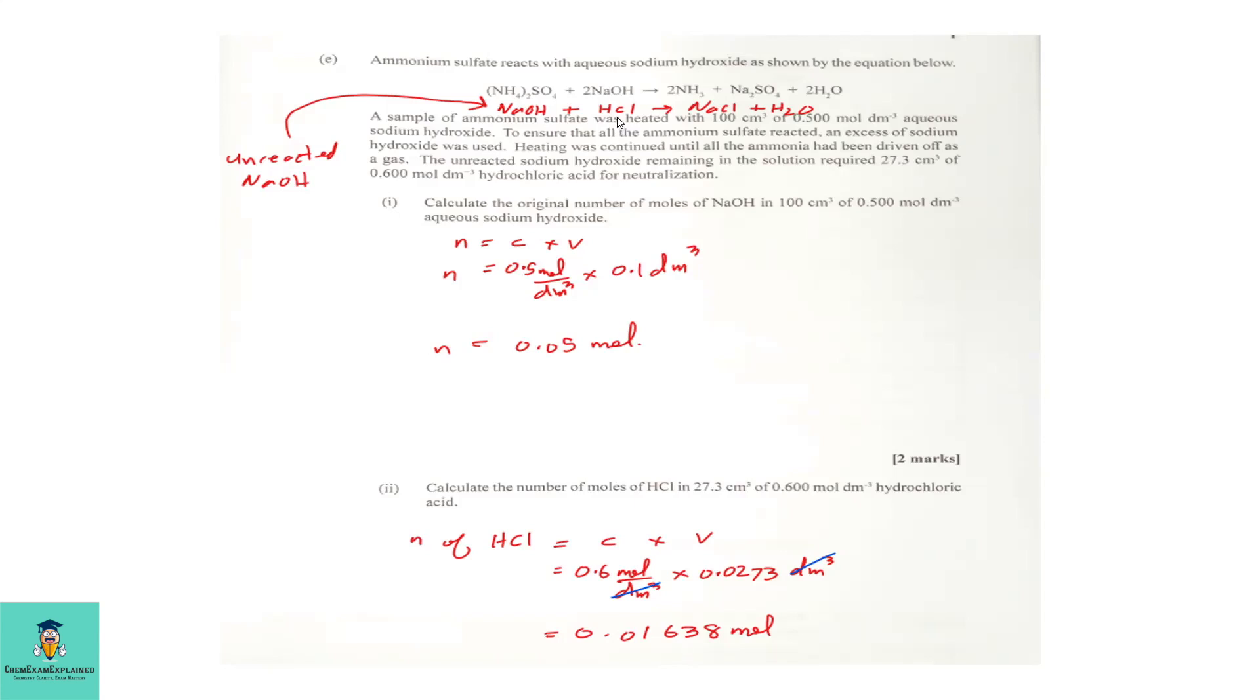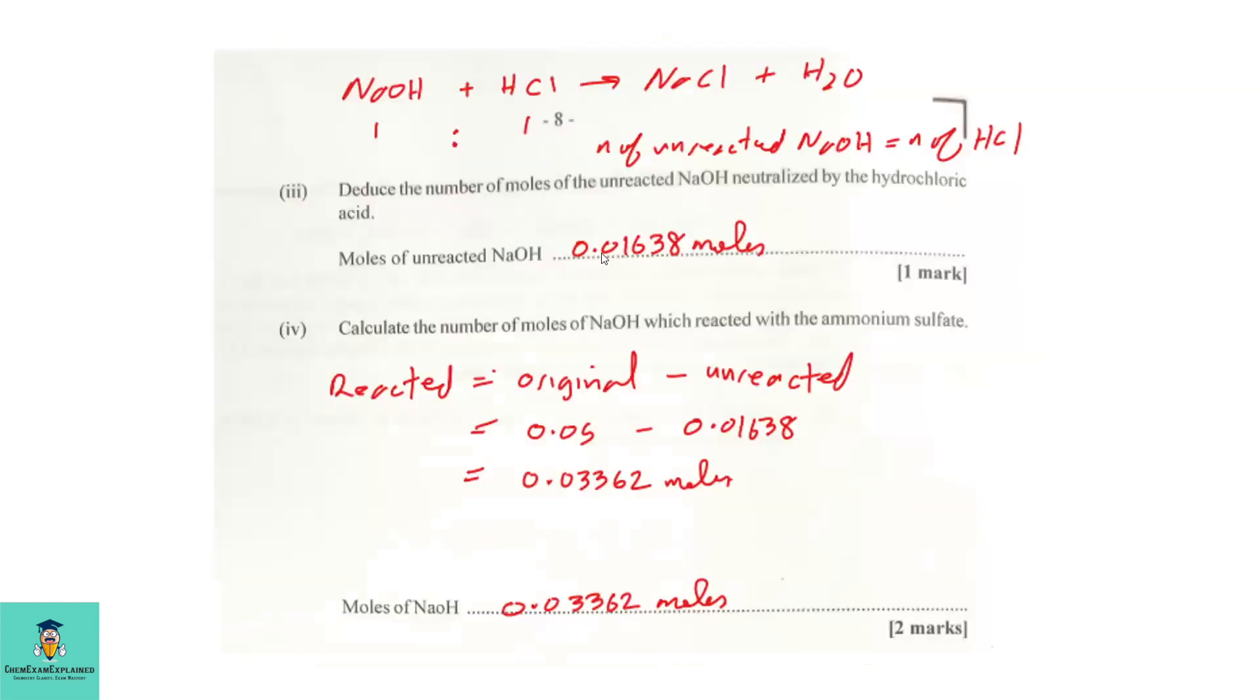So the mole ratio is 1 to 1. So if we know the moles of HCl, we should know the moles of unreacted or excess sodium hydroxide, which is 0.01638 moles. So this is why our answer is 0.01638 moles, because the mole ratio is 1 to 1.